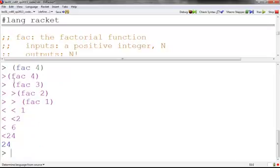When I called fac of 4, it made the call fac 4, fac 3, fac 2, fac 1, which returned 1 to fac 2, fac 2 returned 2 to fac 3, fac 3 returned 6 to fac 4, and then eventually fac 4 returned 24.